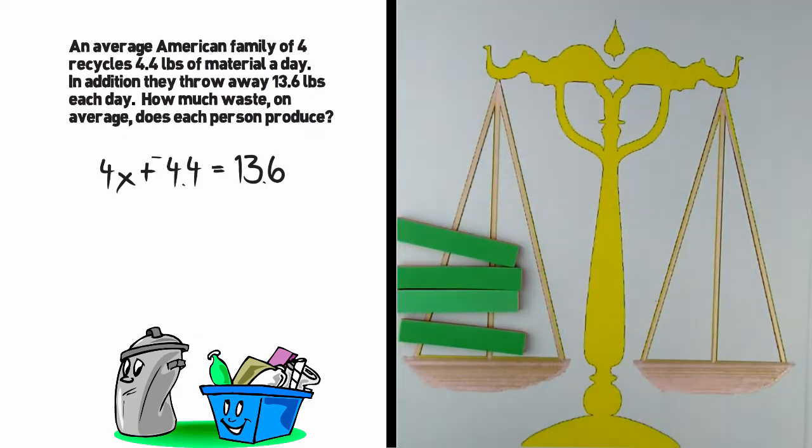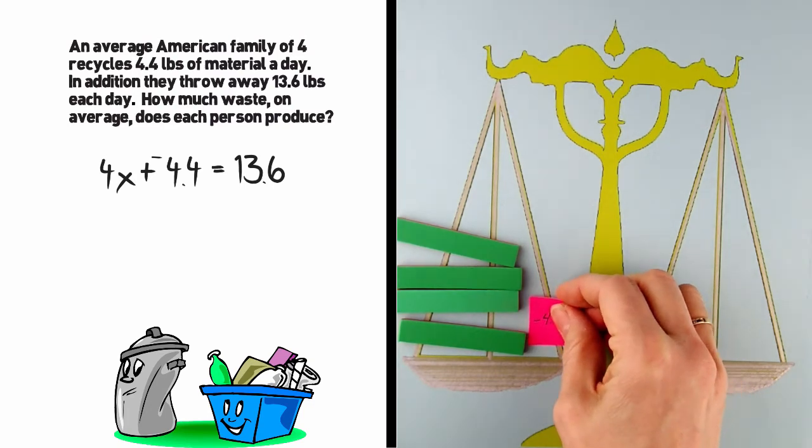Now I am going to try and use my algebra tiles to represent this situation. 4x is easy, but it is harder to represent a decimal. Still, decimals are more like real life. Things do not often come in neat little bundles. So instead of using the yellow pieces, I am simply going to write it out on paper.